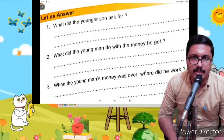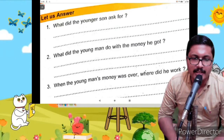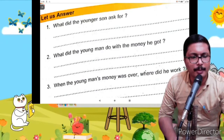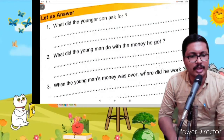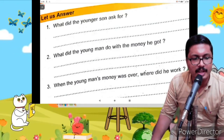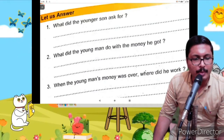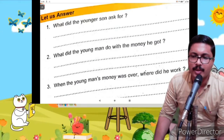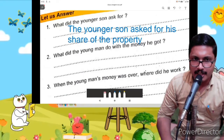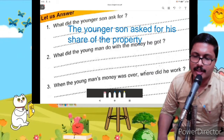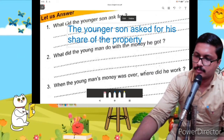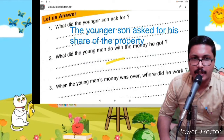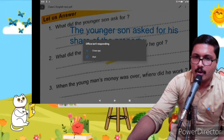What did the younger son ask for? One day the younger son went to his father and said, 'Father, give me my share of the property, I want to go and see the world.' The younger son asked for his share of the property.